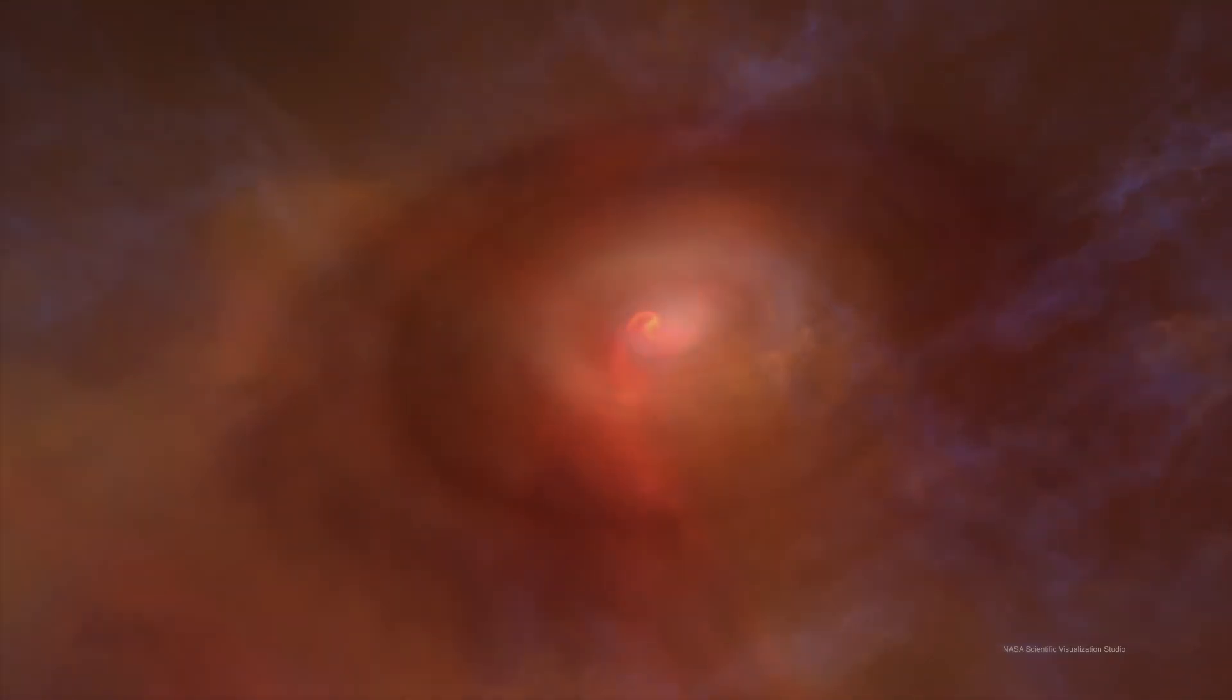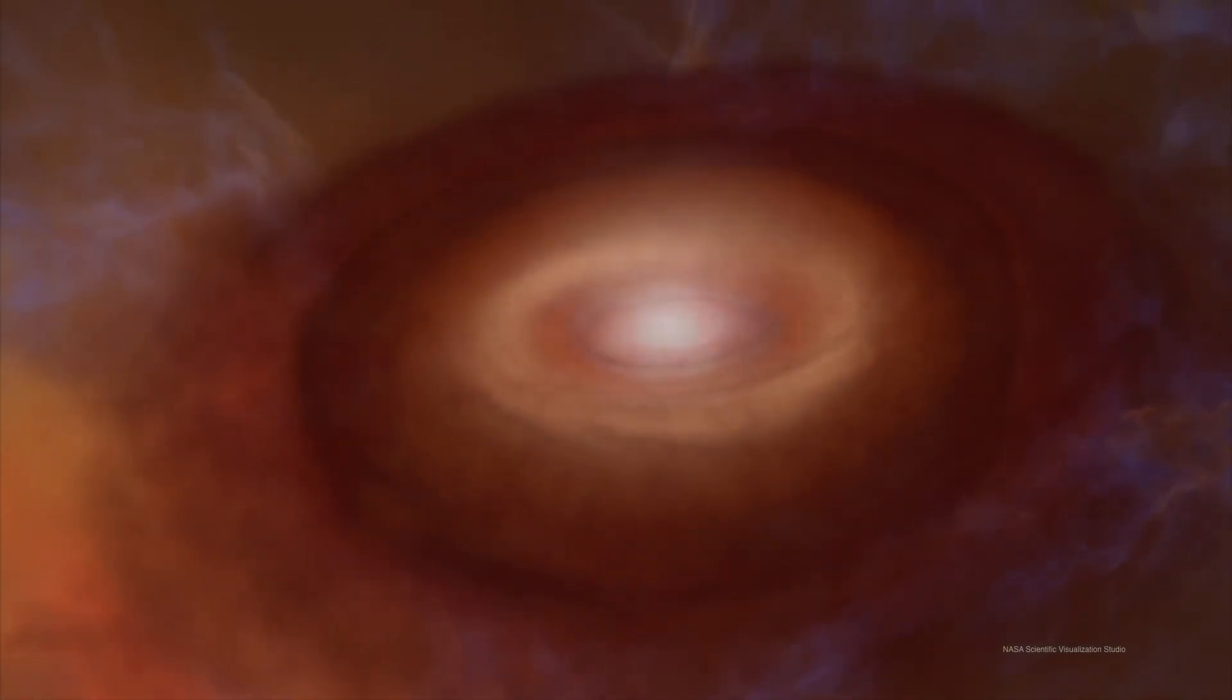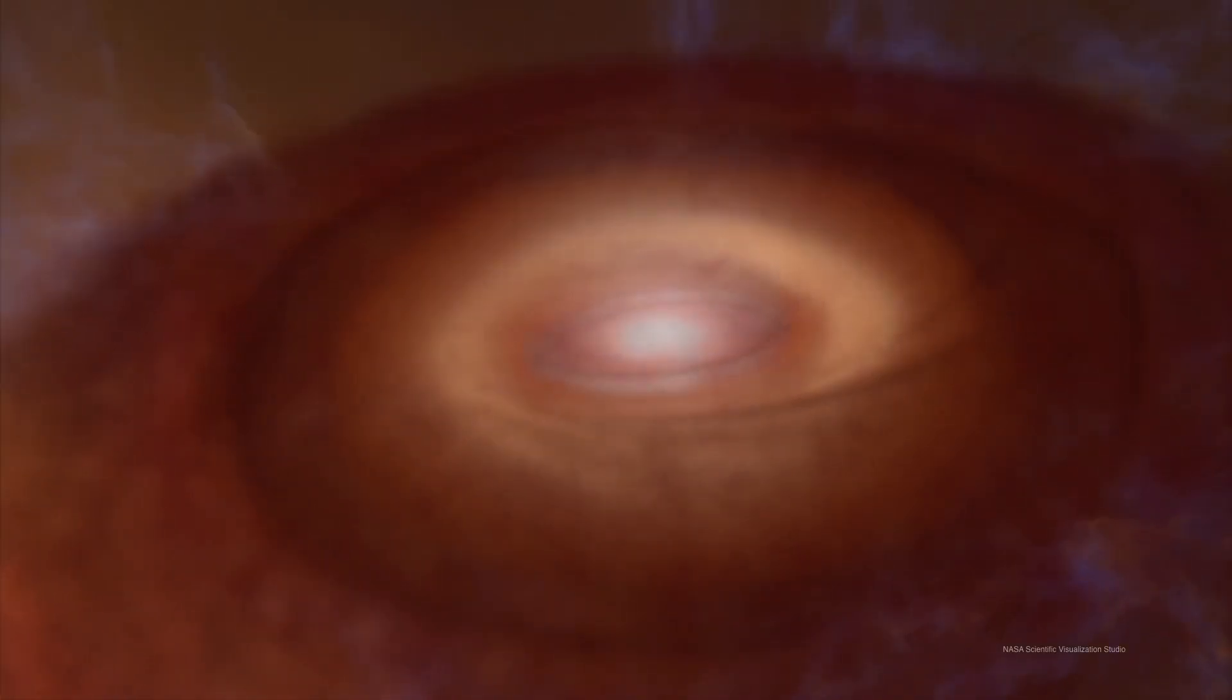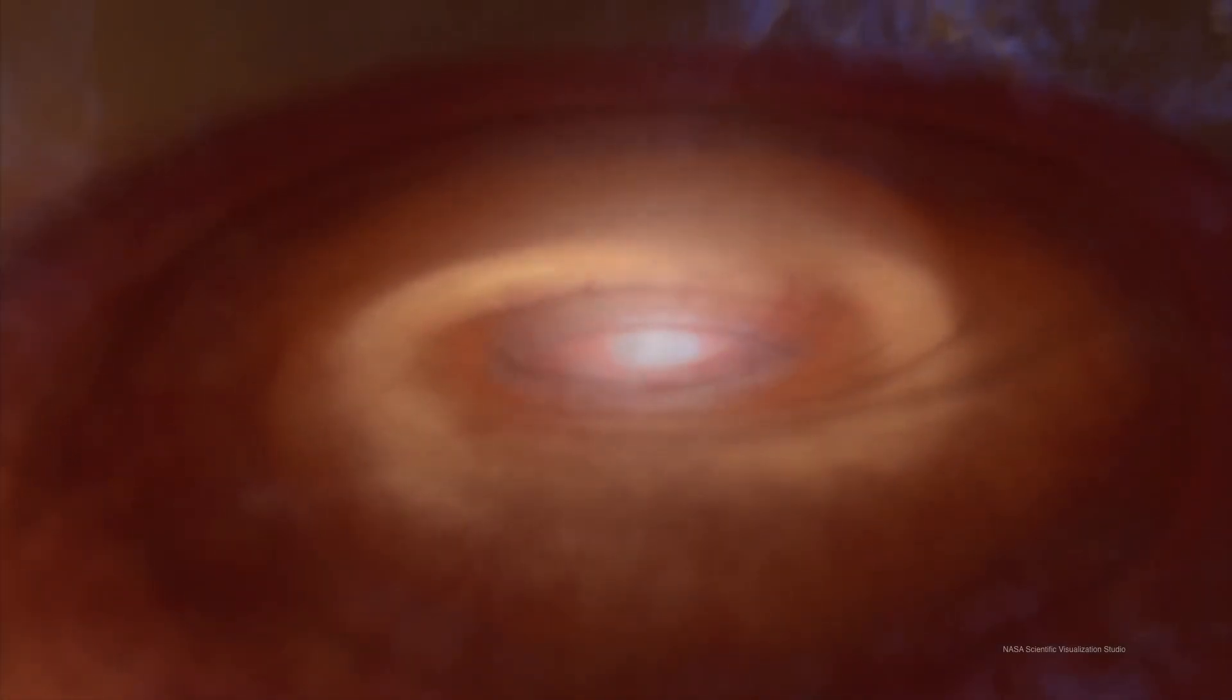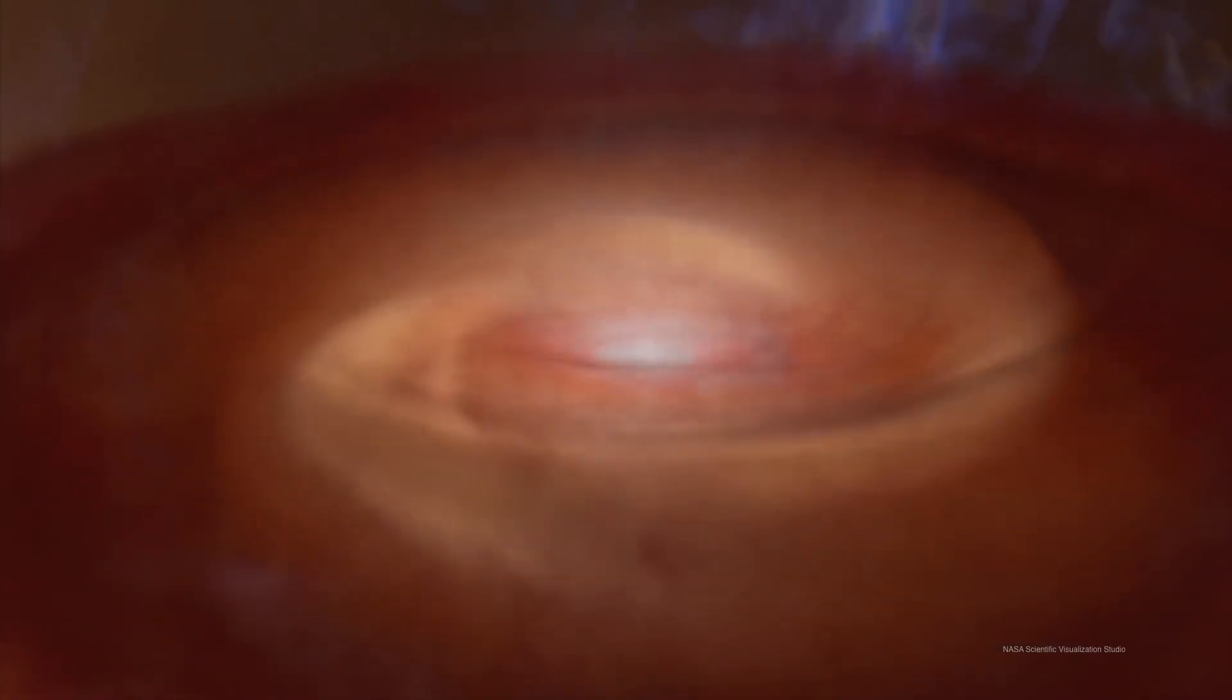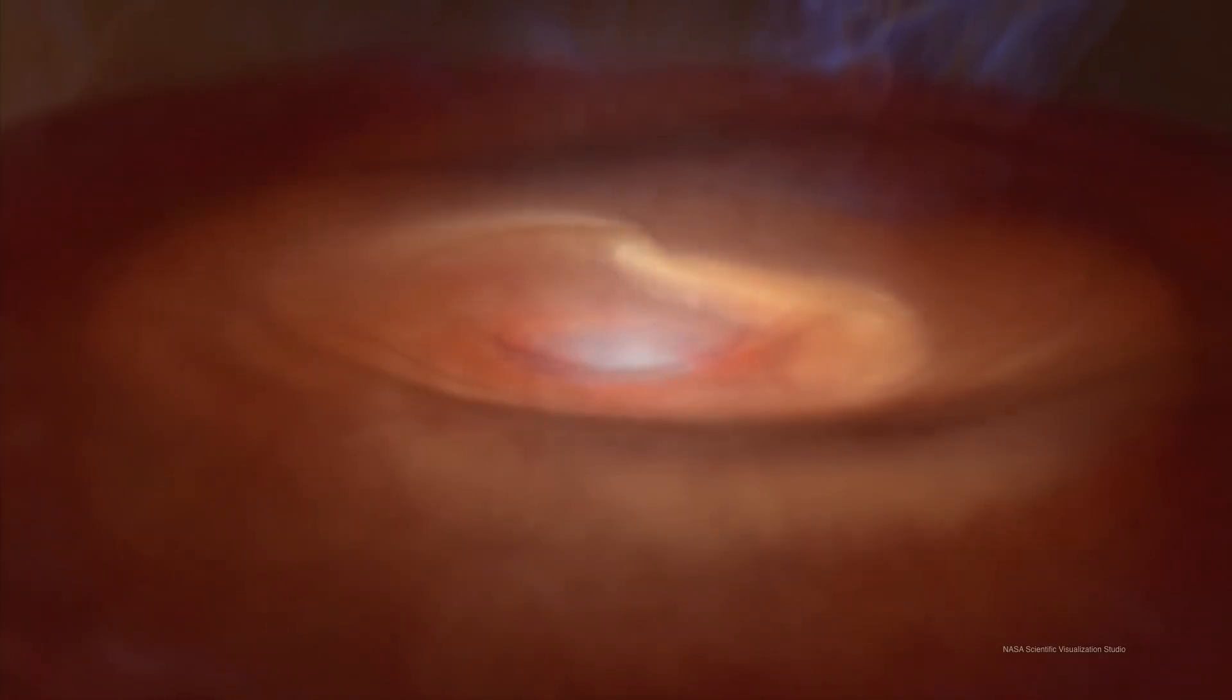We believe our solar system formed within a rotating disk. As this disk was coalescing around the proto-sun depicted at the center, instabilities formed within the disk. The disk fragmented and clumps formed within the disk, giving rise to the ultimate formation of today's planets.